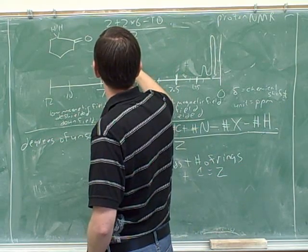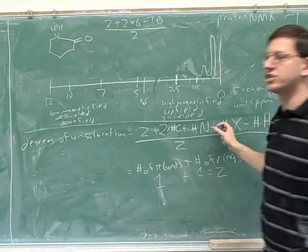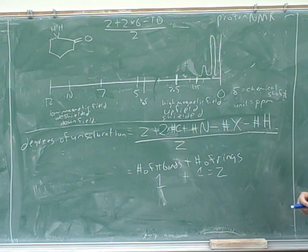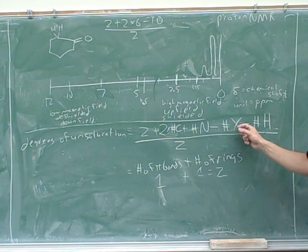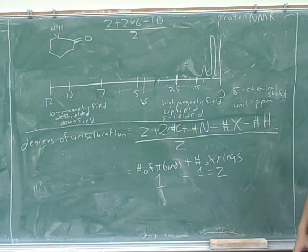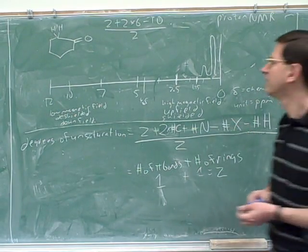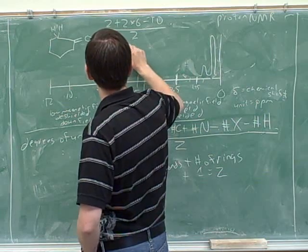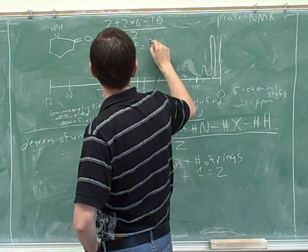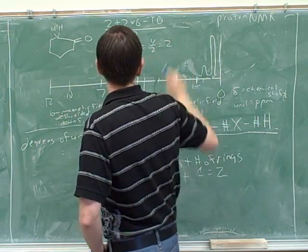So this would be... And don't you have to subtract the oxygen? No. Notice that oxygen does not appear in this formula. X is for halogens. Okay. Yeah, oxygens do not affect the formula. So this would be 12 plus 2 is 14 minus 10 over 2, or over 2, 2.